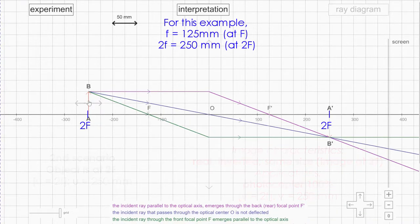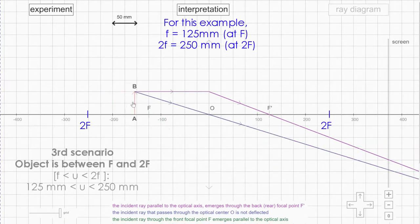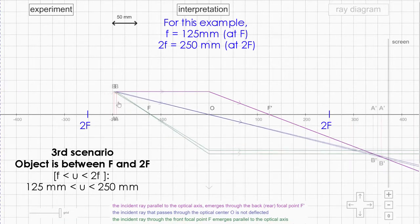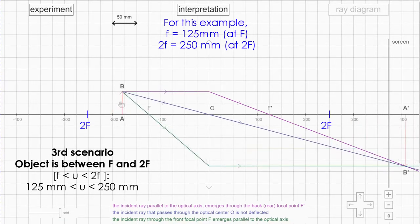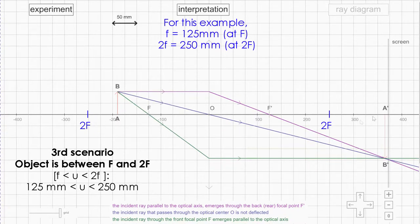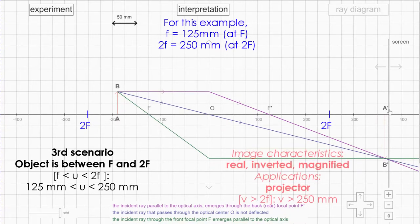The third scenario will be if the object is between f and 2f, anywhere in between here. Take a look at the image formed - it is once again real, inverted, but this is magnified, bigger than the original object. So this application will be your projector or your slide projector.